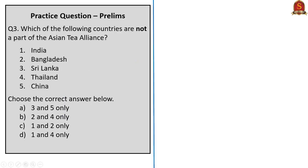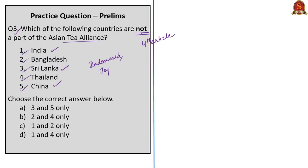Next question: which of the following countries are not part of the Asian Tea Alliance? Options: India, Bangladesh, Sri Lanka, Thailand, China. The five countries that are part of the Asian Tea Alliance are India, China, Sri Lanka, Indonesia, and Japan. So Thailand and Bangladesh are not in the Tea Alliance. Hence the correct option is two and four only.